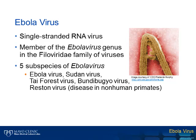Within the Ebola virus genus are five subspecies, including Ebola virus — the causative agent of the current outbreak — Sudan virus, Thai Forest virus, Bundibugyo virus, and Reston virus, which primarily causes disease in non-human primates.